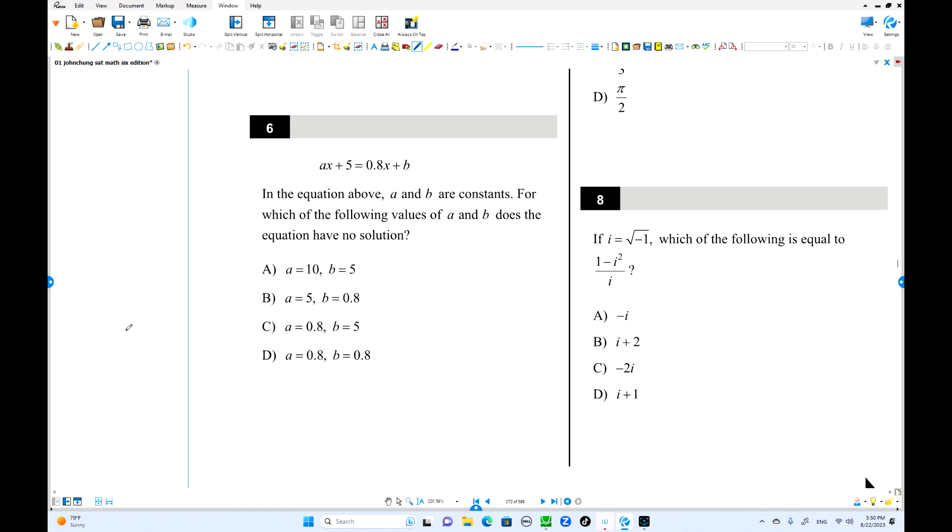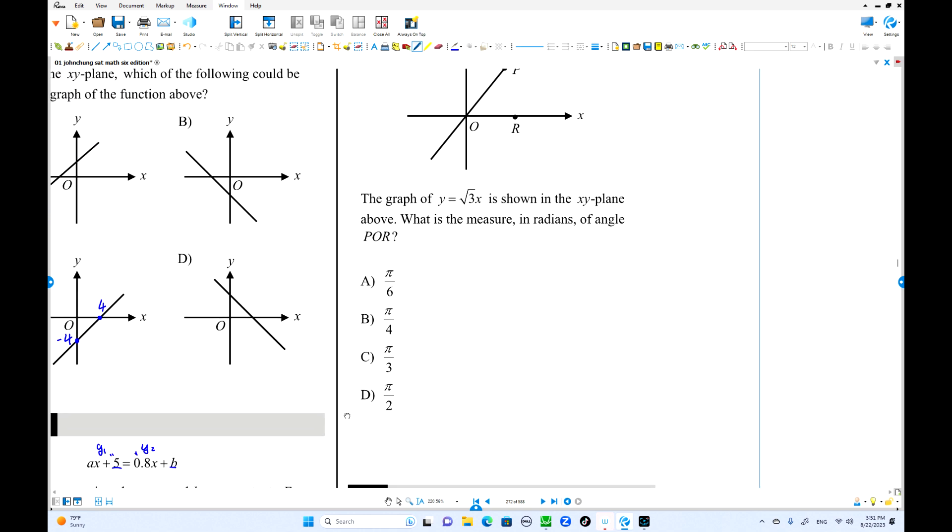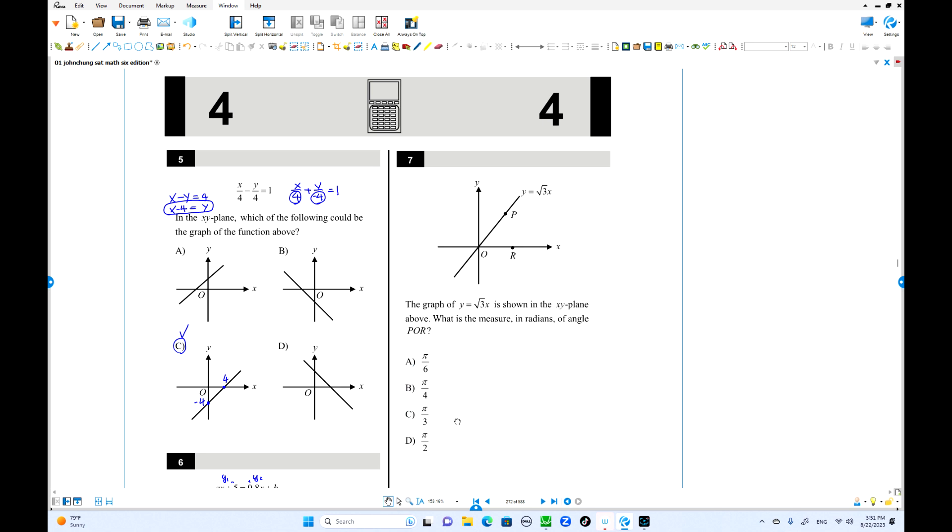Number 6. Which of the following values of A and B does the equation have no solutions? No solutions. Take this is y1, this is y2. It's going to have the same slope. So A should be 0.8. But B cannot be equals to 5. Different y intercept. So choice C is a coincidence. Exactly same line. So we're going to choose B different number, 0.8. That is fine. That means the same slope and different y-intercept. They're not going to have any intersection.